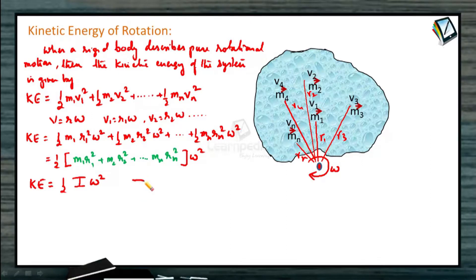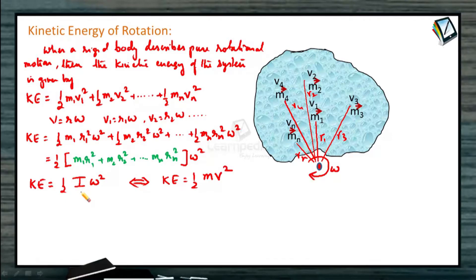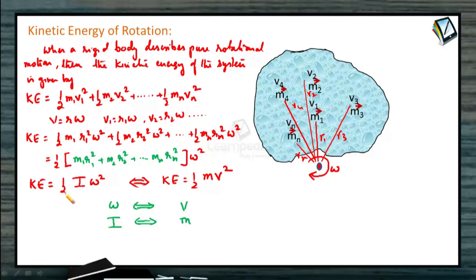This rotational inertia we substitute as capital I, so kinetic energy of rotation is half I ω². Comparing with the kinetic energy of translation, which is half mv², if v is the translational velocity, ω is the angular velocity. The role that mass m plays in translational motion as inertia, capital I plays in rotational motion. So the kinetic energy of rotation is half I ω², whereas kinetic energy of translation is half mv².